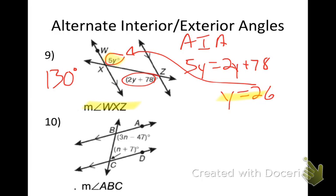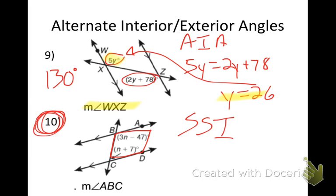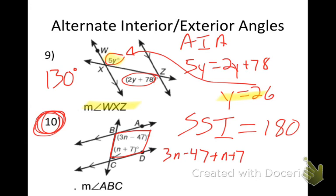Number ten — trick question. What type of angles are these? Those are same side interior angles. Are they congruent? No — same side interior angles add up to 180. So I would say 3N − 47 + N + 7 = 180, and set the sum of both expressions equal to 180.